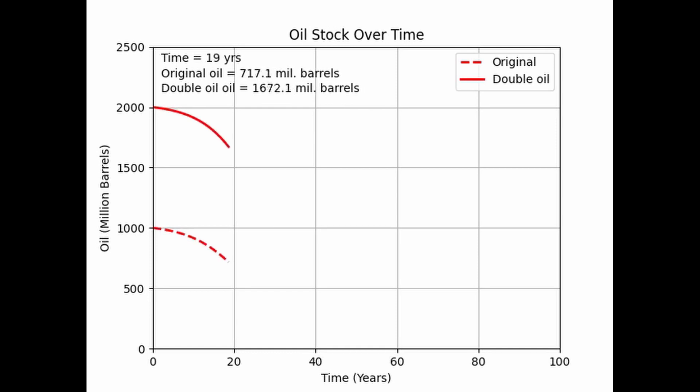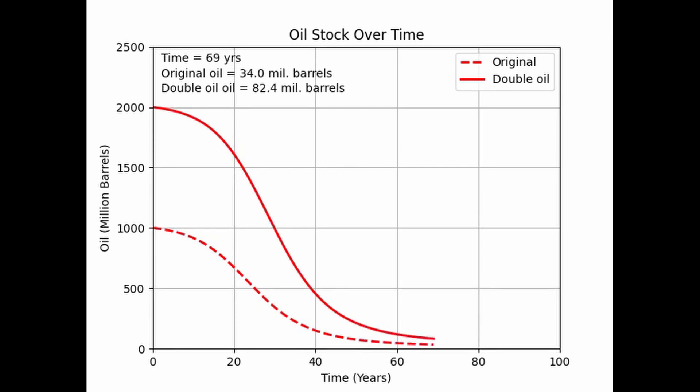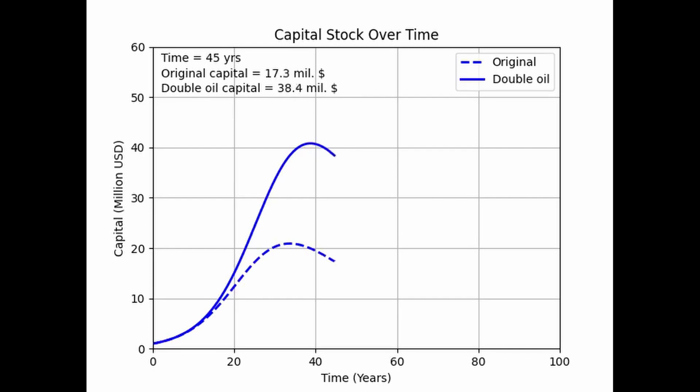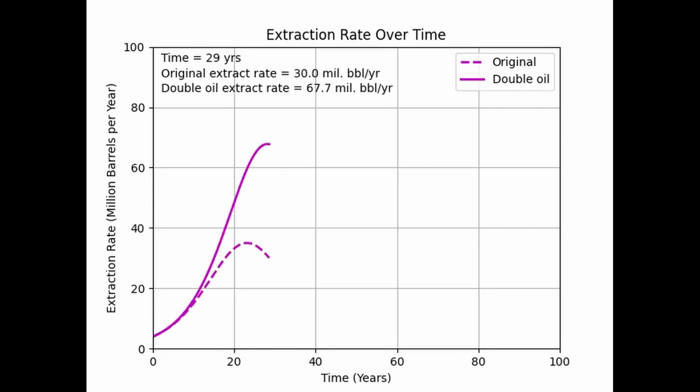Here we see the dynamics of depletion occurring any time that a non-renewable, desirable resource is being extracted. To get a better understanding of depletion dynamics, let's tweak a few parameters. What happens when we double the amount of oil available? Looking at the oil stock, it appears that even with double the oil available, the remaining oil drops to basically zero only about 10 years later. Double the oil does not mean double the amount of time you have to extract it. The capital stock peaks about 5 years later but decays more steeply, and the peak extraction rate is quite a lot higher but drops off much faster.